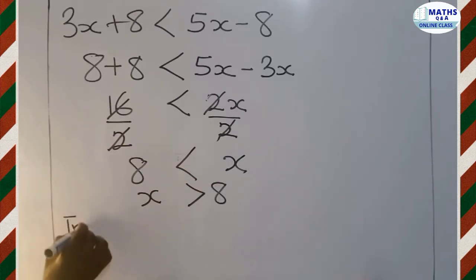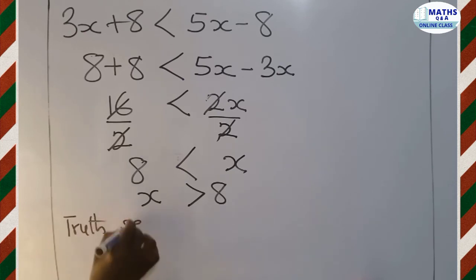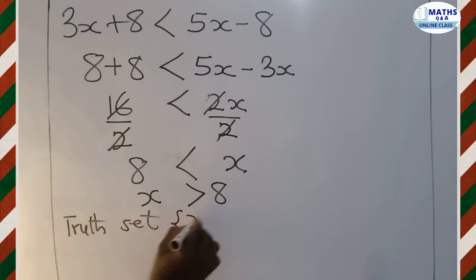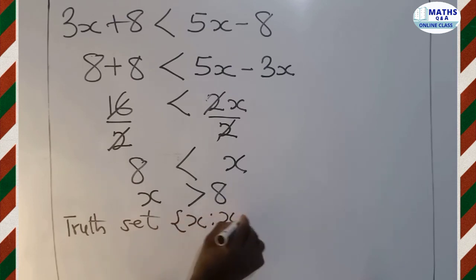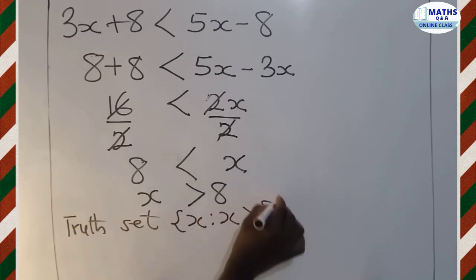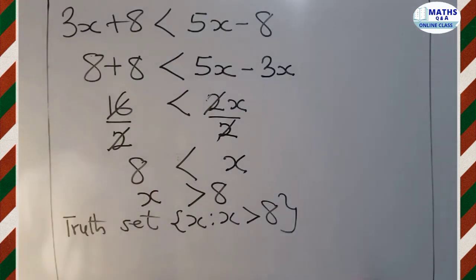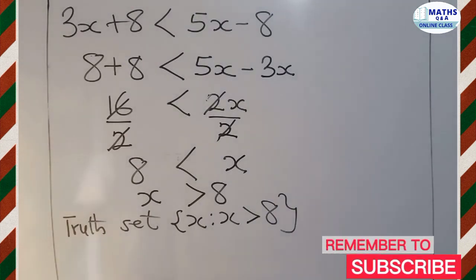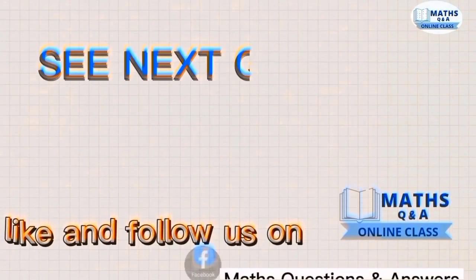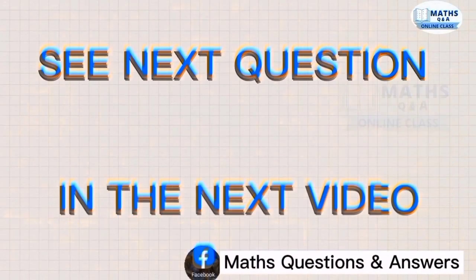Now let's write the truth set. So the truth set of the results we've had here is that x is a set that x is greater than 8. So this becomes the truth set for the inequality question. 3x plus 8 less than 5x minus 8. Thank you.